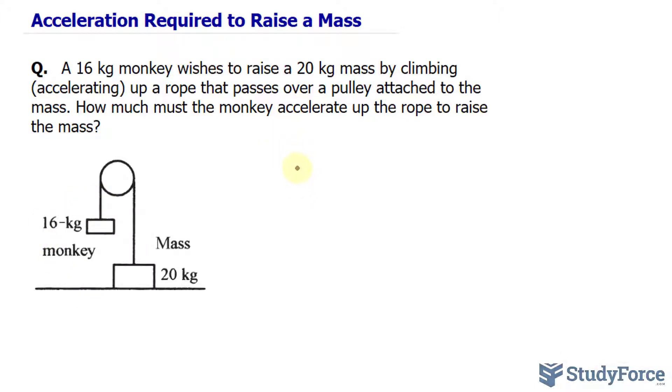We'll start with the monkey. Remember that force is mass times acceleration, and in this case, the mass is 16. Make sure that mass is in kilograms, and the acceleration due to gravity is 9.8.